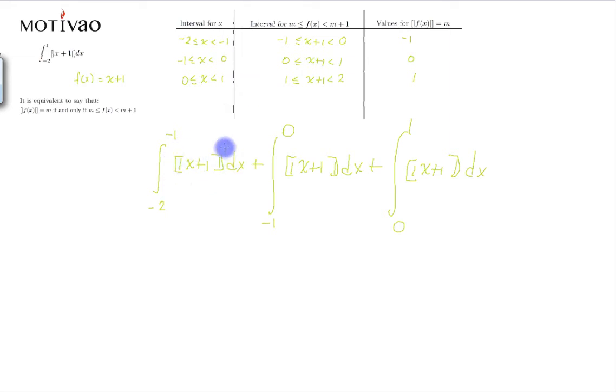Now once we've separated into these intervals, we're going to put the values into each interval. So this becomes minus 2 to minus 1, x plus 1 in this interval is minus 1. Minus 1 to 0, x plus 1 in that interval is 0. And 0 to 1, in that interval the value is 1.